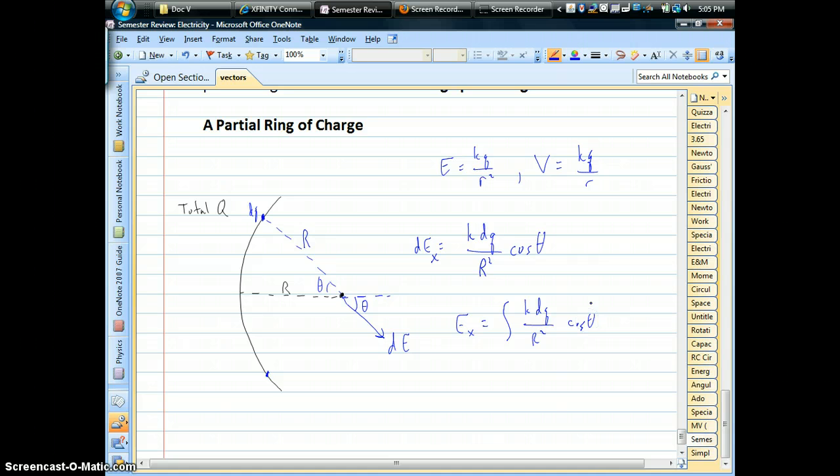Okay, now it looks like it might be easy enough just to solve. There's one issue, though. We run into a problem. If you think about what's the difference going from point to point to point on this partial ring,